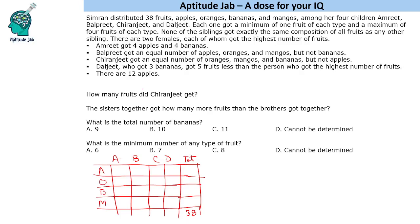There are 12 apples in total. Amrit got 4 apples and 4 bananas. Balpreet got an equal number of apples, oranges and mangoes, but not bananas — so apple, oranges and mangoes are equal; let us call that number A. Chiranjeet got an equal number of oranges, mangoes and bananas, but not apples. The values for Chiranjeet should be different from Balpreet's equal value.